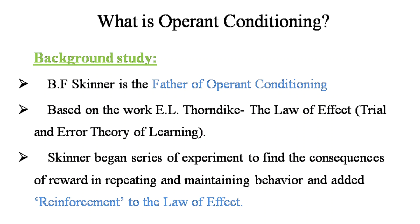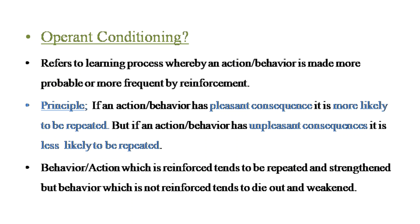To learn operant conditioning, let us look at the background of B.F. Skinner. He propagated the operant conditioning theory of learning and is known as the father of operant conditioning. His theory was based on earlier psychologist E.L. Thorndike's work — specifically the trial and error theory of learning. Skinner was particularly interested in the law of effect, and began a series of experiments on animals to find the consequences of rewards in repeating and maintaining behavior. After these experiments, he introduced a new term — reinforcement — into the law of effect.